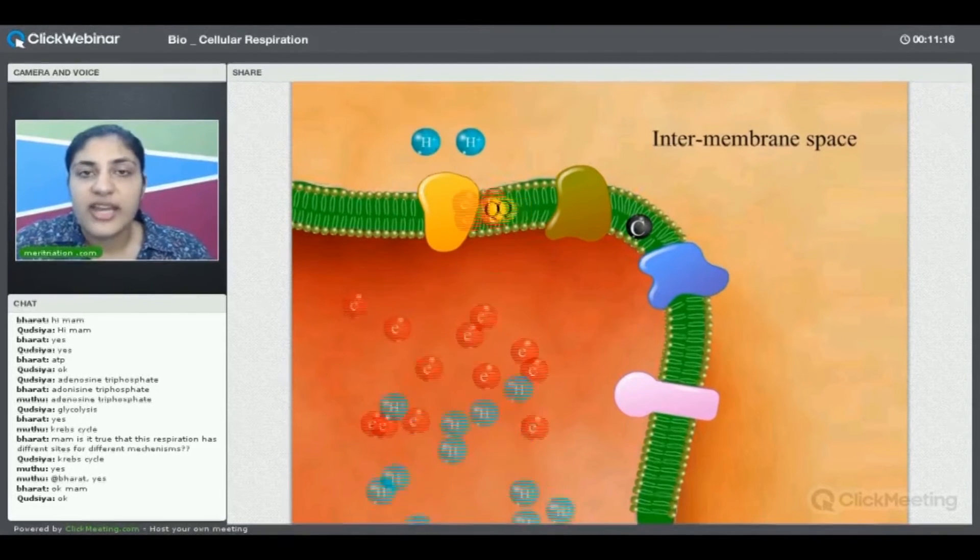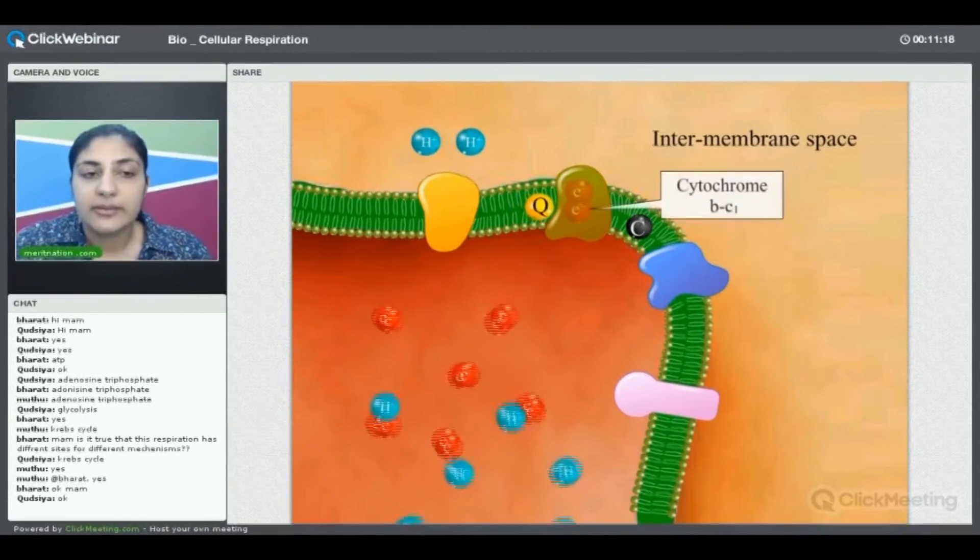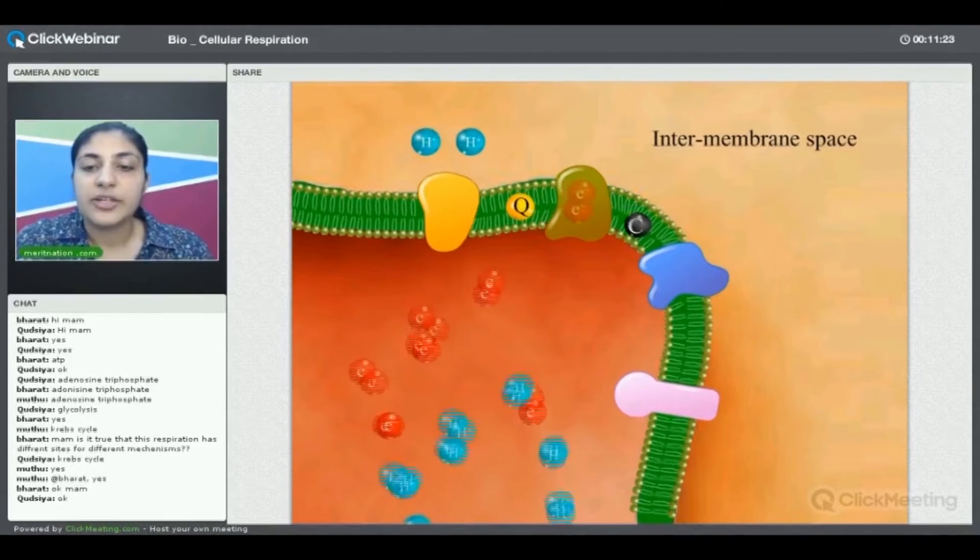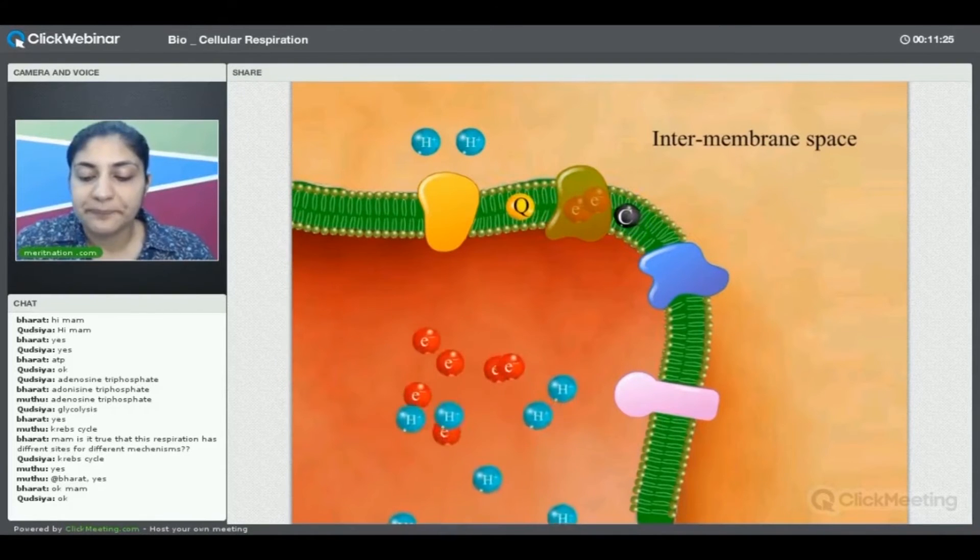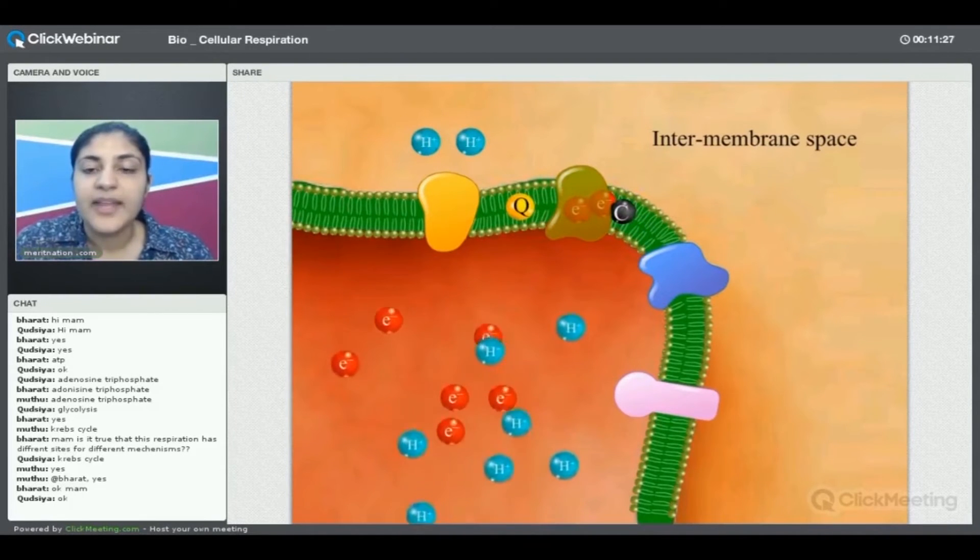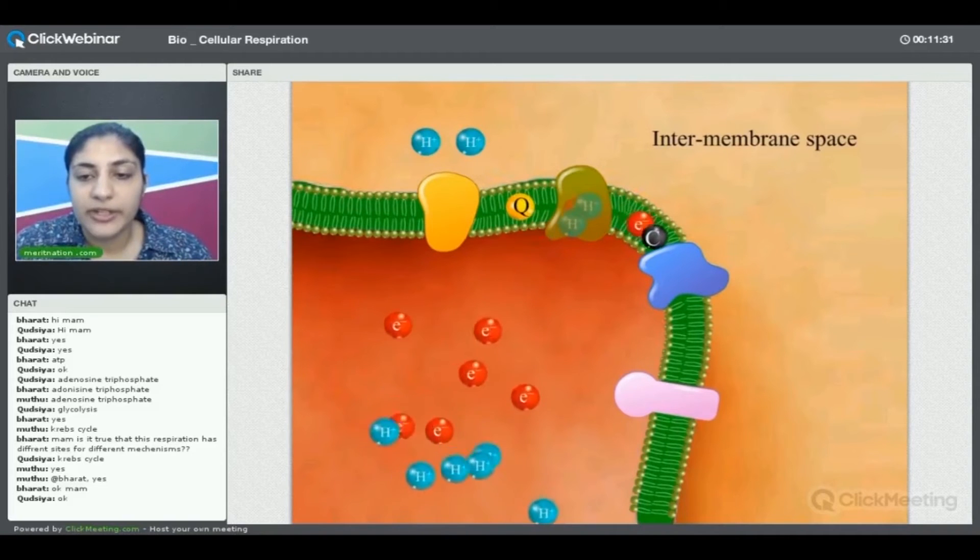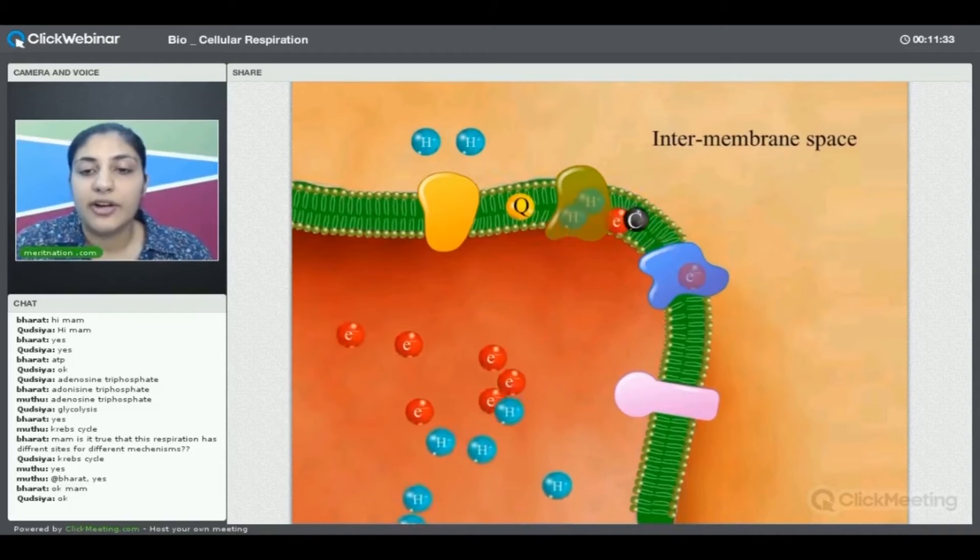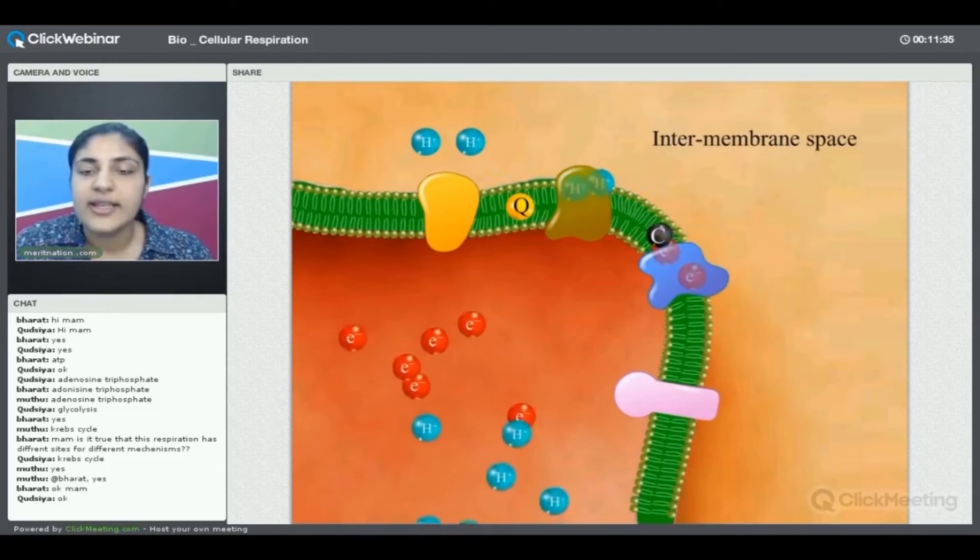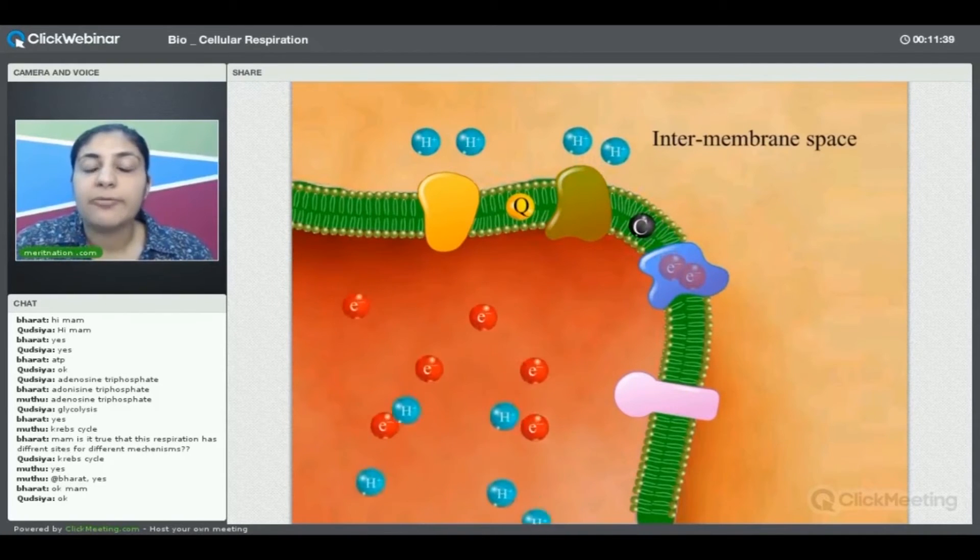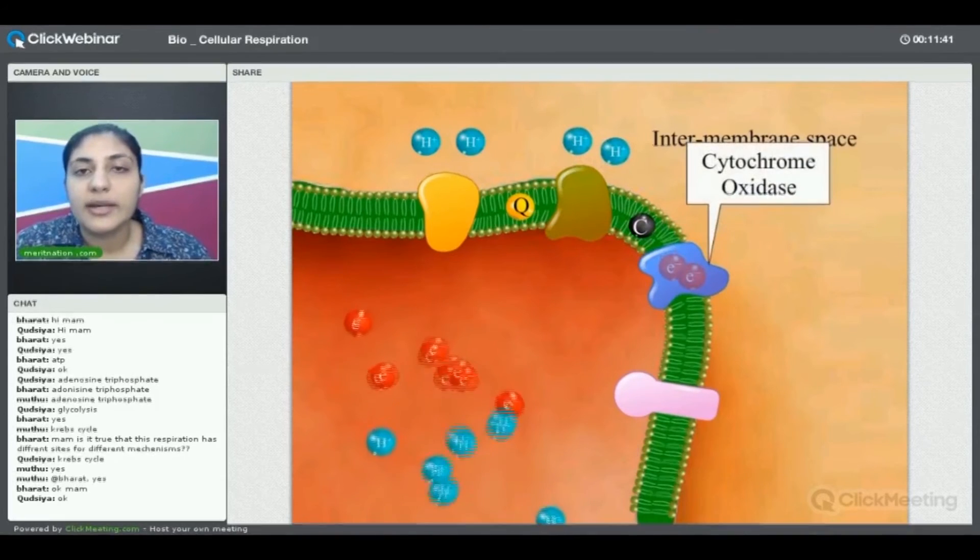The next step is that our ubiquinone, which is a mobile carrier that can easily move in the intermembrane, will carry these electrons and transfer it to cytochrome bc1. Here again, electrons will further be transported to another electronegative molecule, cytochrome oxidase, but in this process protons again will be pumped from the matrix region towards the intermembrane space.